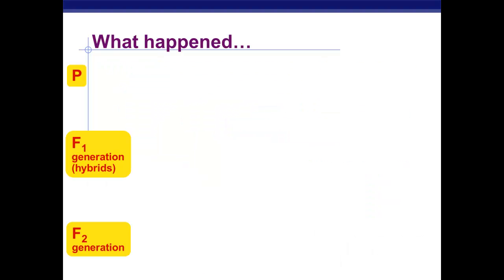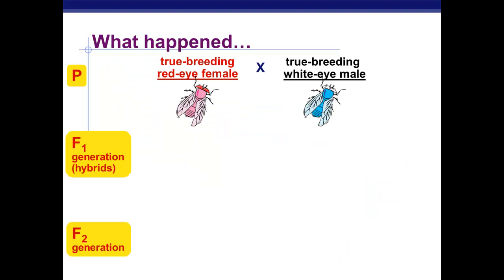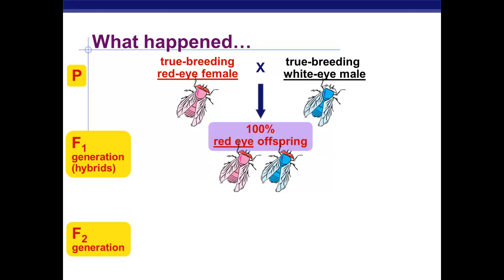So he decided to breed this male fly with white eyes with a female fly who had red eyes. Now, in case you're not familiar with fruit flies, red eye is the normal color for flies. Anyways, he bred this white-eyed male with a red-eyed female. And as you might expect with a sort of dominant recessive relationship, all of the offspring, male and female, had red eyes.